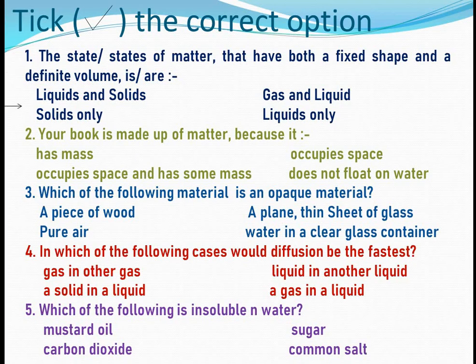Next, tick the correct option. First: the state of matter that has both a fixed shape and a definite volume — options are solids only, liquid and solids, gases and liquid, or liquid only. The correct answer is solids only.